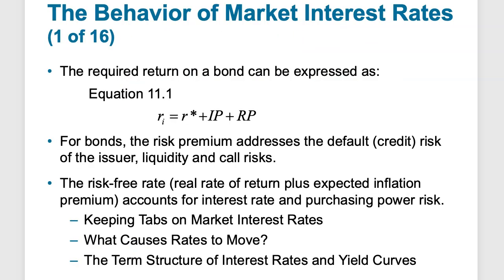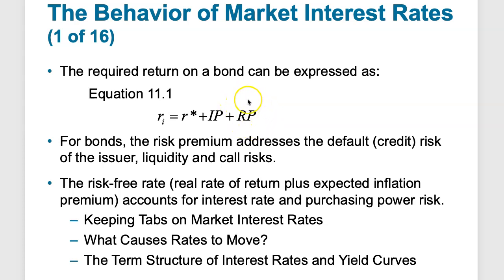Let's talk about the required return of a bond, expressed in equation 11.1. The variable r-sub-i is the required return, which is made up of the real rate of return plus inflation plus risk premium. For bonds, the risk premium covers default risk, credit risk of the issuer, the issuer going bankrupt or not being able to pay, liquidity risks, and call risks.